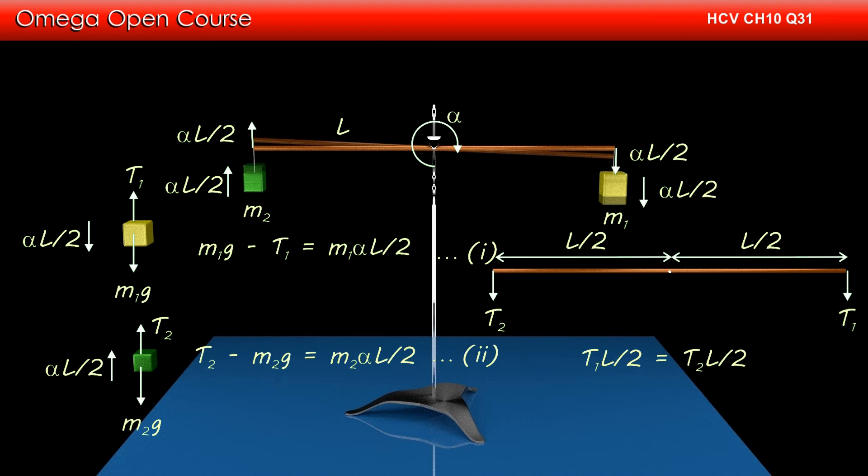Therefore, t1 times l by 2 must equal t2 times l by 2. Simplifying, we get t1 equals t2.